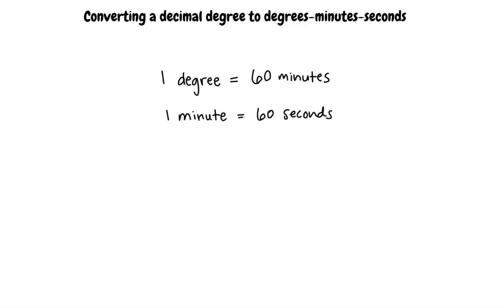That's correct. We can abbreviate minutes using a prime sign, sometimes called a hatch mark, and seconds using a double prime sign, sometimes called a double hatch mark. We will write degrees-minutes-seconds as the following.